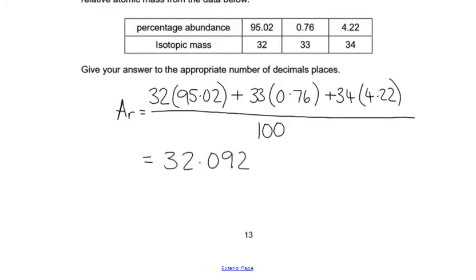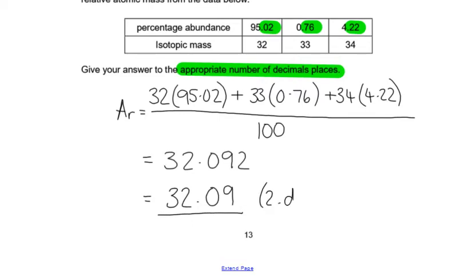So this is what my calculator's reading, but I'm going to go back and I'm going to check the question, it says, appropriate number of decimal places. Now, I'm not going to use isotopic mass to work that out, because isotopic mass is number of protons plus neutrons, it's always a whole number. I'm going to use this, the decimal places here, and so there are two, so I'm going to round this to two decimal places, 32.09.